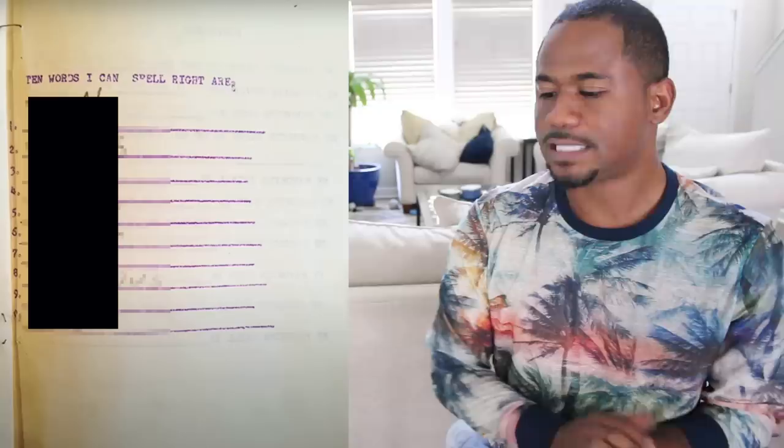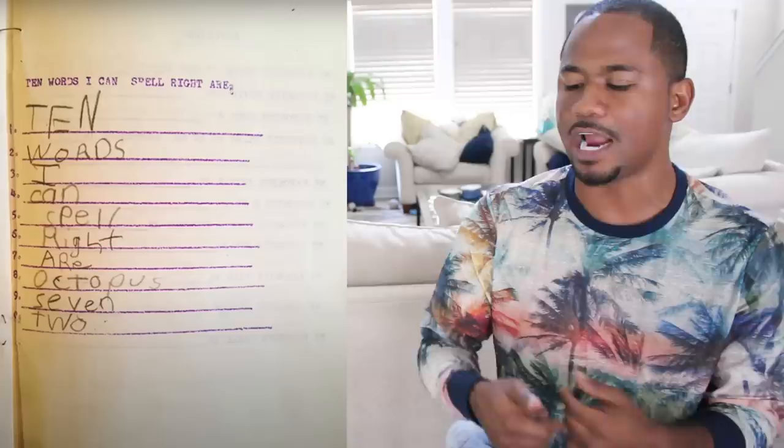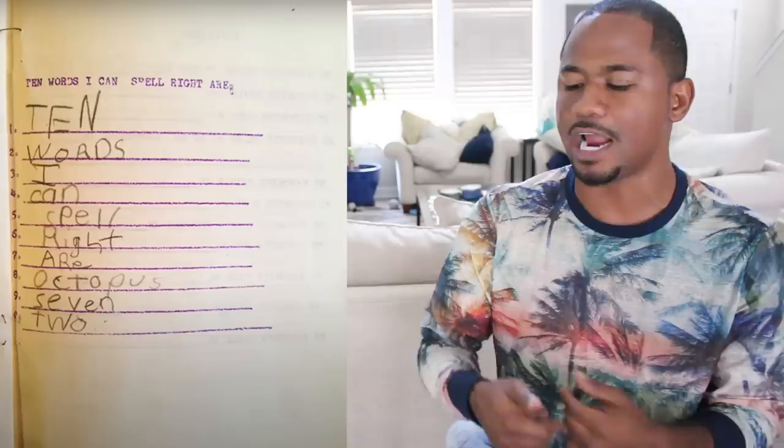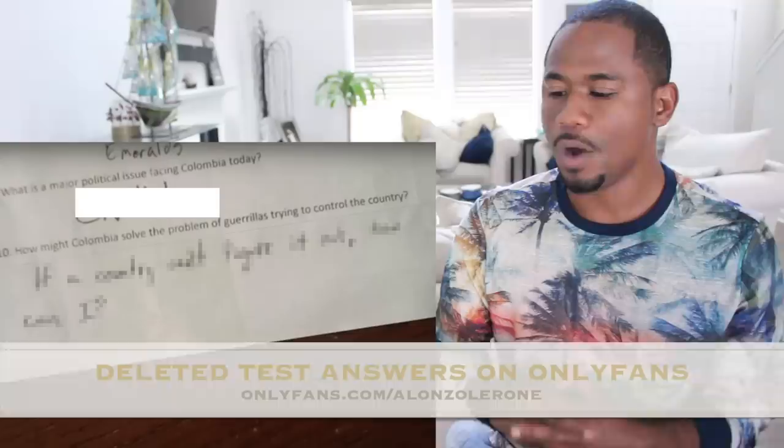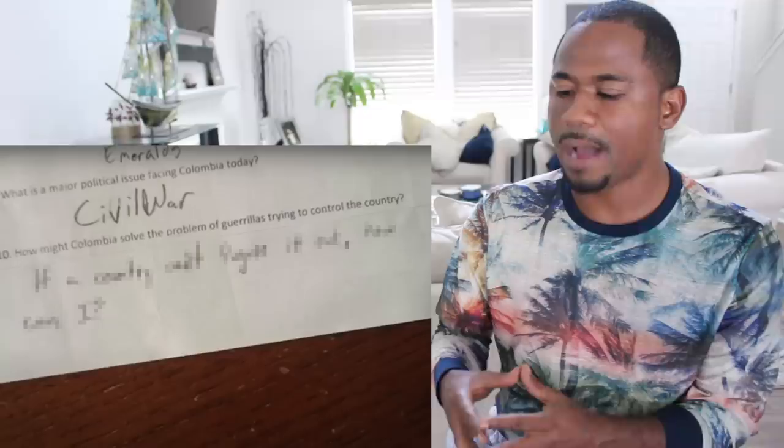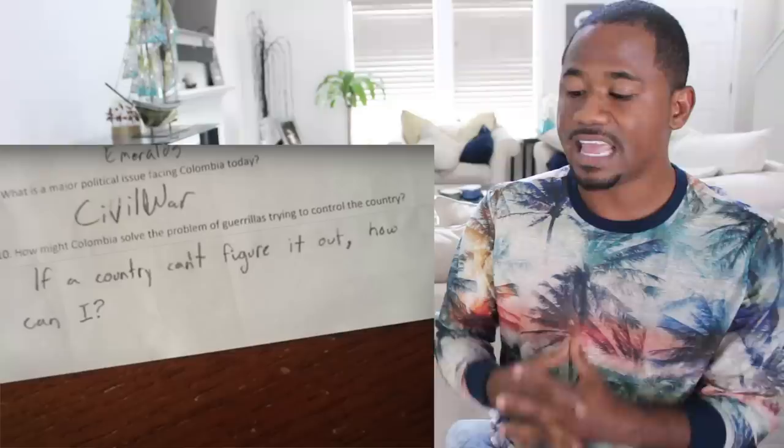Ten words I can spell right are: 'octopus, seven, and two.' What is a major political issue facing Colombia today? 'The civil war.' How might Colombia solve the problem of guerrillas trying to control the country? 'If a country can't figure it out, how can I?' Thumbs up if you don't know either — thumbs up anyway.